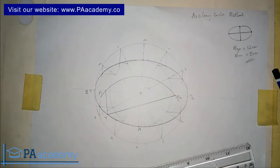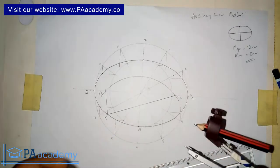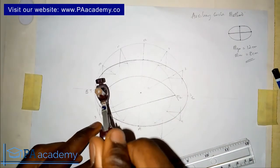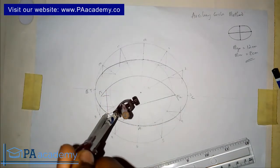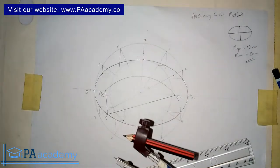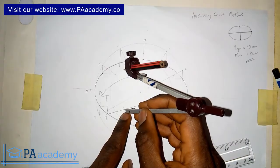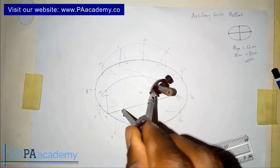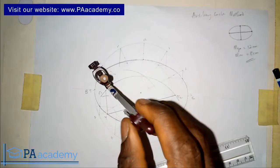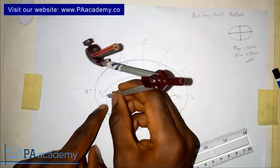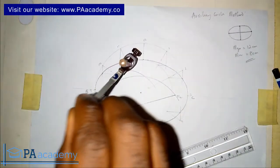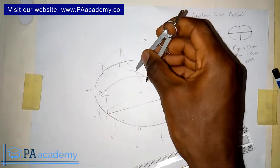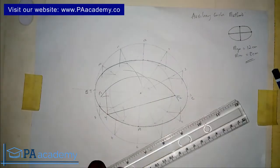The next thing you have to do is bisect this angle. To do that, set your compass to a convenient length and place it on point Y. Draw an arc on line F1Y, then with the same length draw an arc on line F2Y. Now increase the compass length, place it on the arc intersection on the first line and draw another arc, then bring it to the arc on the second line and draw another arc.